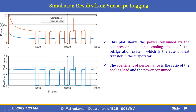This plot shows the power consumed by the compressor and the cooling load of the refrigeration system, which is the rate of heat transfer in the evaporator. The next diagram shows the coefficient of performance, which is the ratio of cooling load to power consumed.